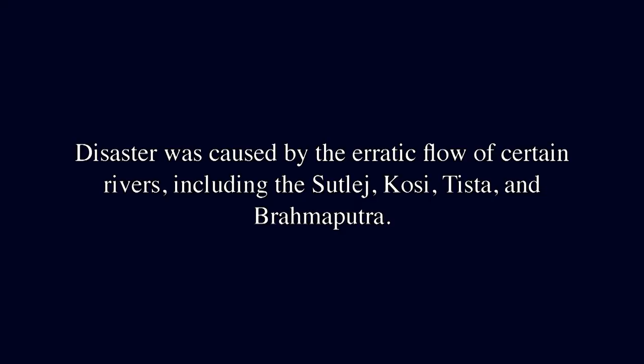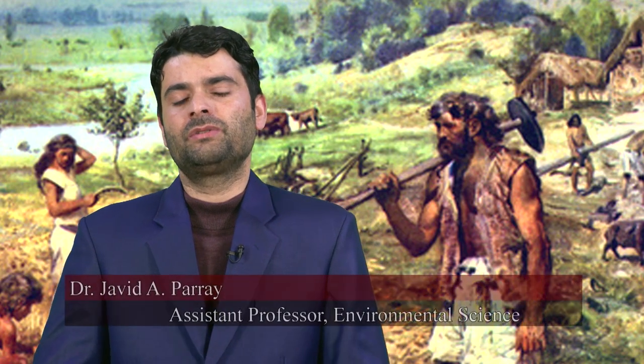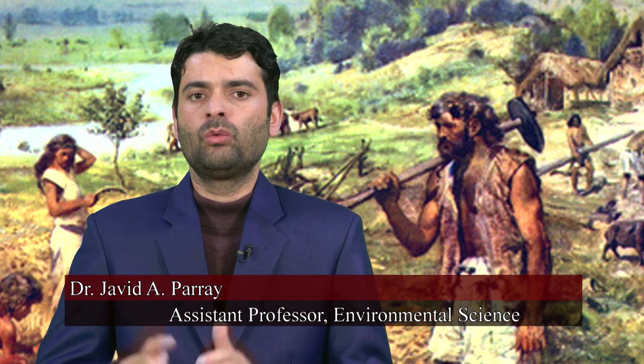Farmers were drawn to several rivers because they were covered in fertile silt. The first disasters were caused by the erratic flow of certain rivers, including the Sutlej, Kosi, Teesta, and Brahmaputra. The first urbanization along the Indus river system began in the second part of the third millennium BC, while the second along the Ganges river system began in the first millennium BC.